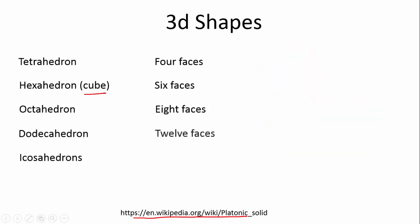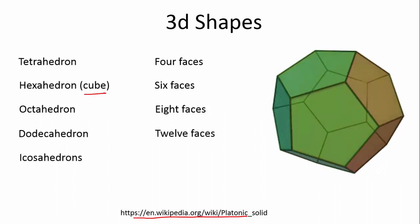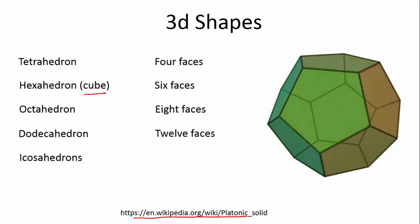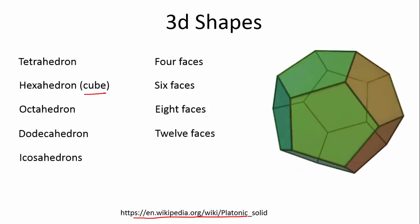Dodecahedron. This is 12 faces. This starts getting a little bit more complicated to try and visualize. But here we have essentially a pentagon, which has 5 sides, on each of the surfaces of the shape.